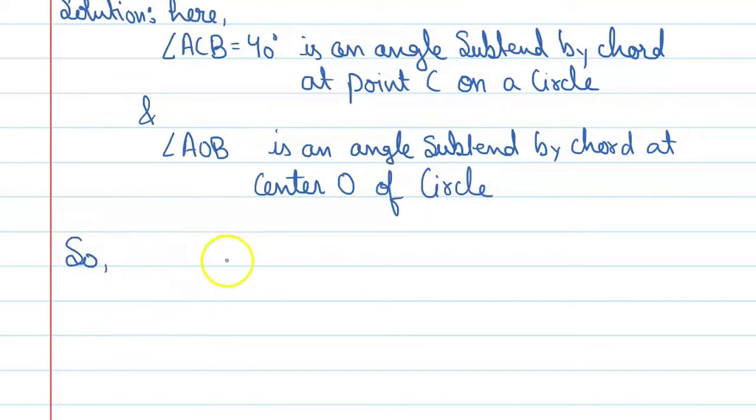So, angle AOB is equal to double of angle ACB. So, angle AOB will be equal to 2 times 40 degrees. This is equal to 80 degrees.